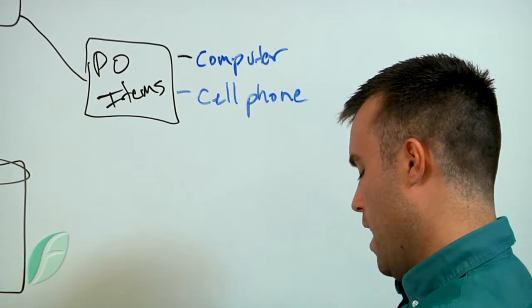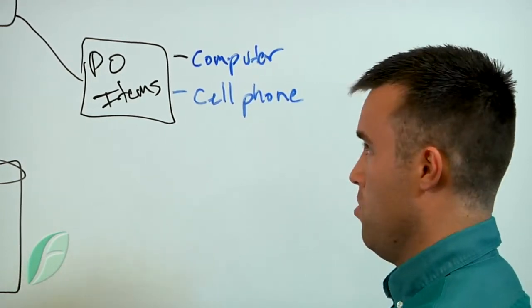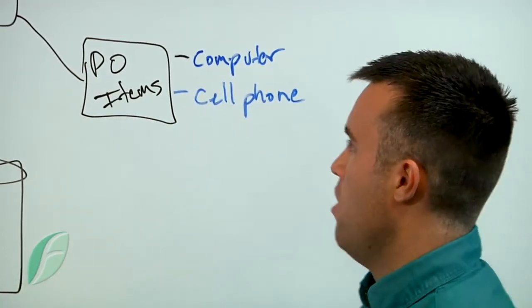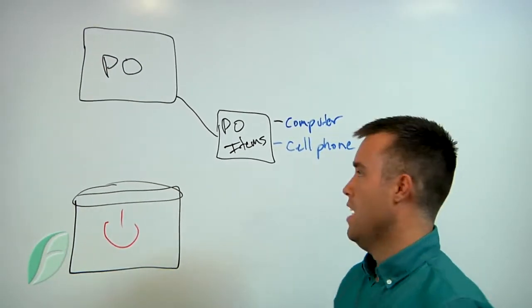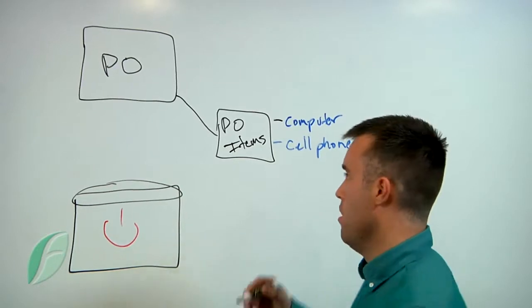From there, once you're ready to create a purchase order, we can generate a PDF of that purchase order with our information, with our line items, to send to a client or wherever you're purchasing that.